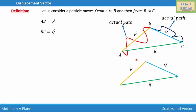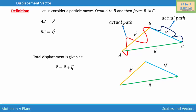We now have a triangle with vectors p, q, and r. The total resultant displacement is given as vector r, which is the resultant of displacement p and displacement q. Therefore, we can write: vector r equals vector p plus vector q. This is how we represent the displacement vector.